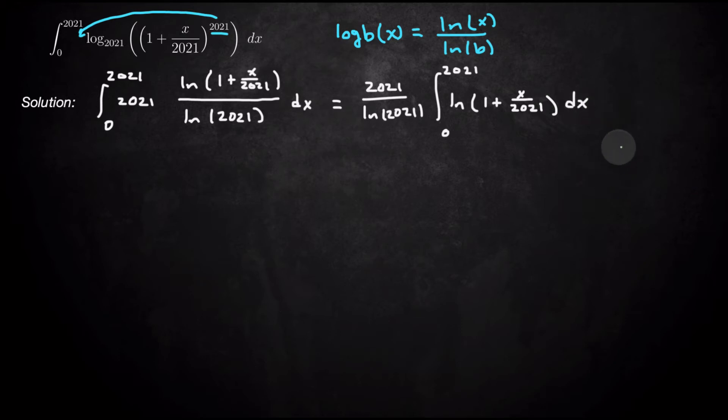And now it's just a normal integral. I'll probably do a little substitution to get rid of the 1 plus x over 2021. So if I do substitution, I'll probably do like w equals 1 plus x over 2021.